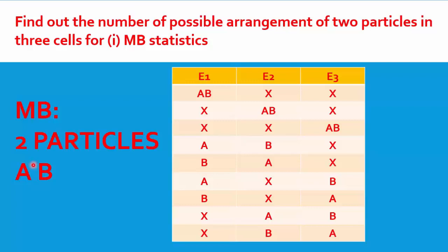From this problem, what is the meaning of macrostate? It means that you have three cells or three energy levels and you have two particles. When these two particles are to be arranged among these three energy levels or three cells, the possible arrangements are called microstates. Let us see how these two particles can be arranged in three energy levels.